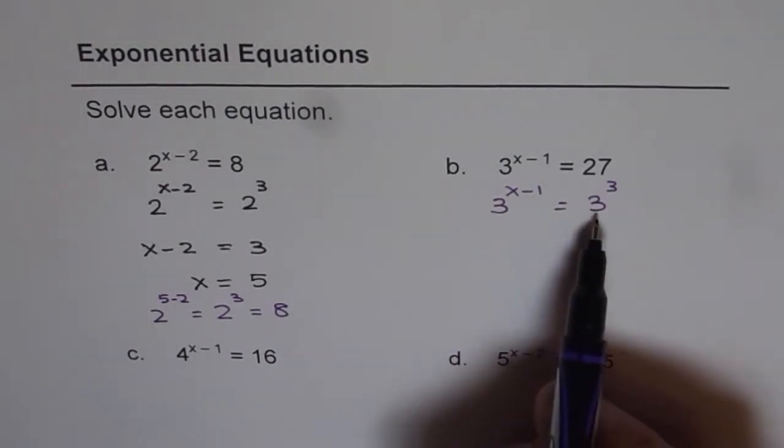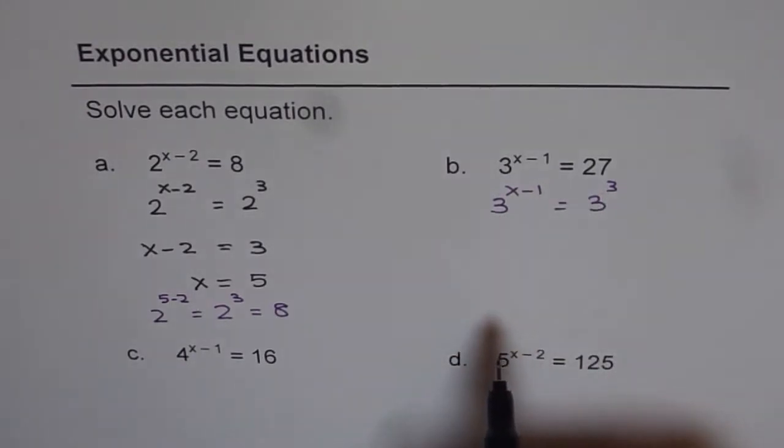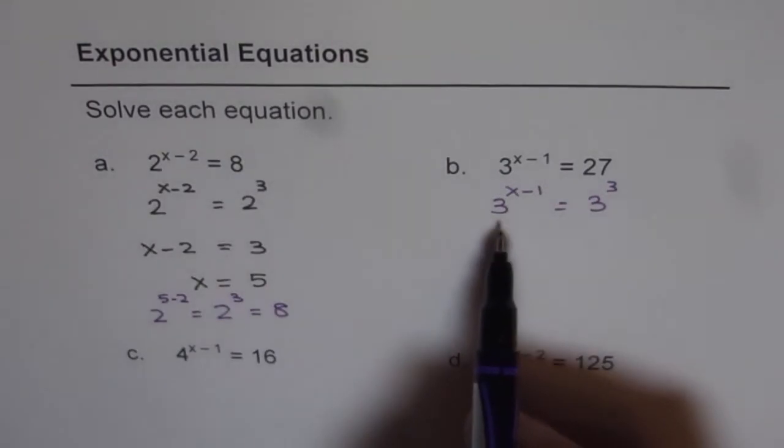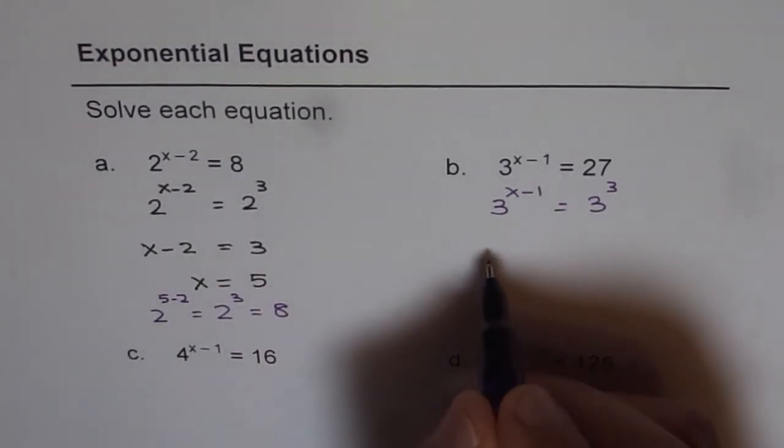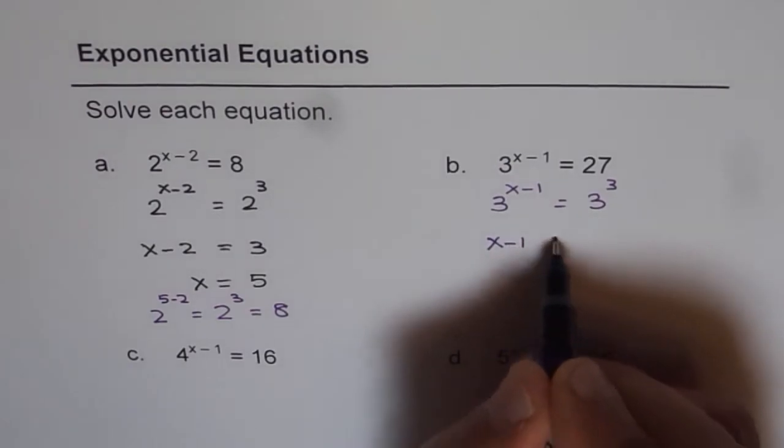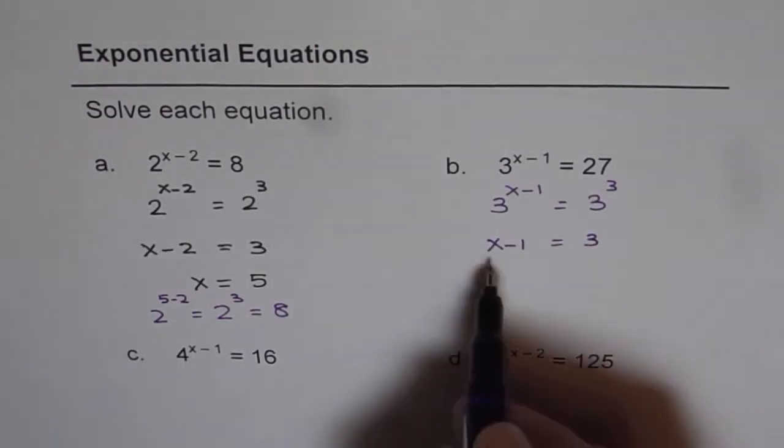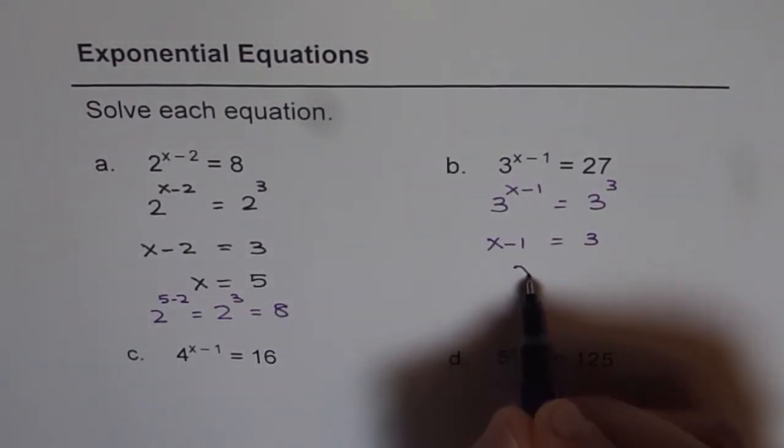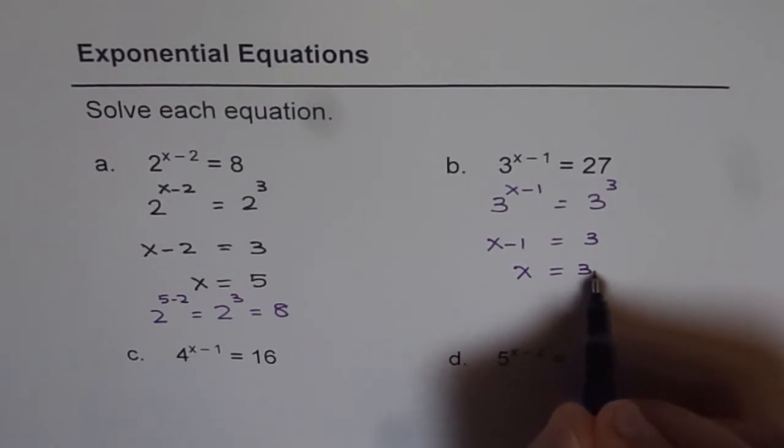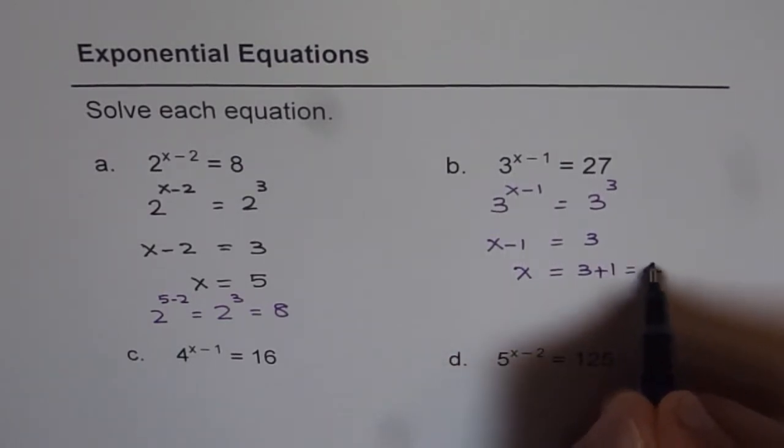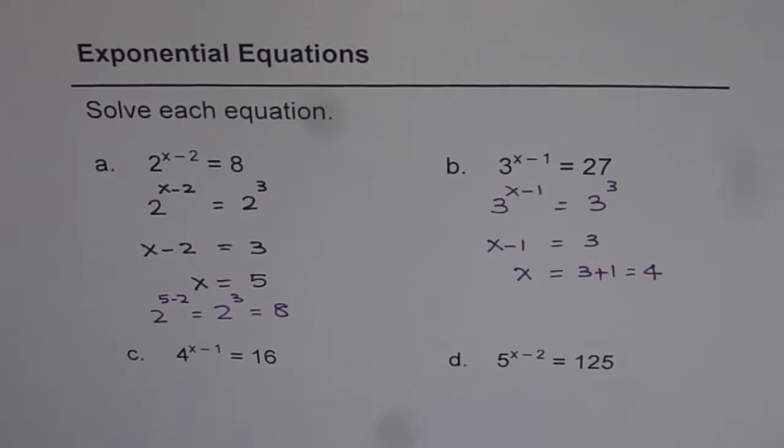Now since we have the same base which is 3 and it is an equation, exponents should be equal. Only then left side will be equal to right side. So let's equate x minus 1 equals 3 and figure out what x is. From here, x is equal to 3 plus 1 which is 4. So we get 4 as our answer.